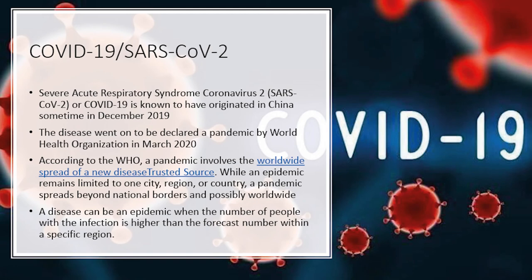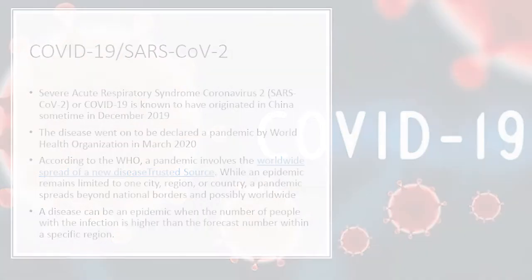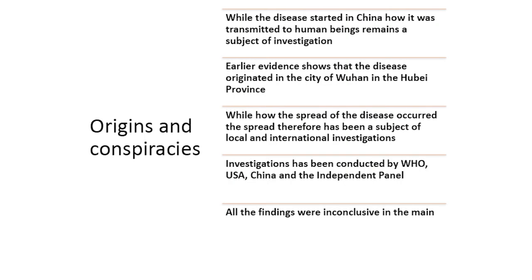Severe Acute Respiratory Syndrome Coronavirus 2, also known as SARS-CoV-2, or Coronavirus Disease of 2019 — abbreviated COVID-19 — is known to have originated in China sometime in December, in Wuhan, Hubei province. China notified the World Health Organization on the 31st of December that there was an outbreak of this novel coronavirus at a market in Wuhan.